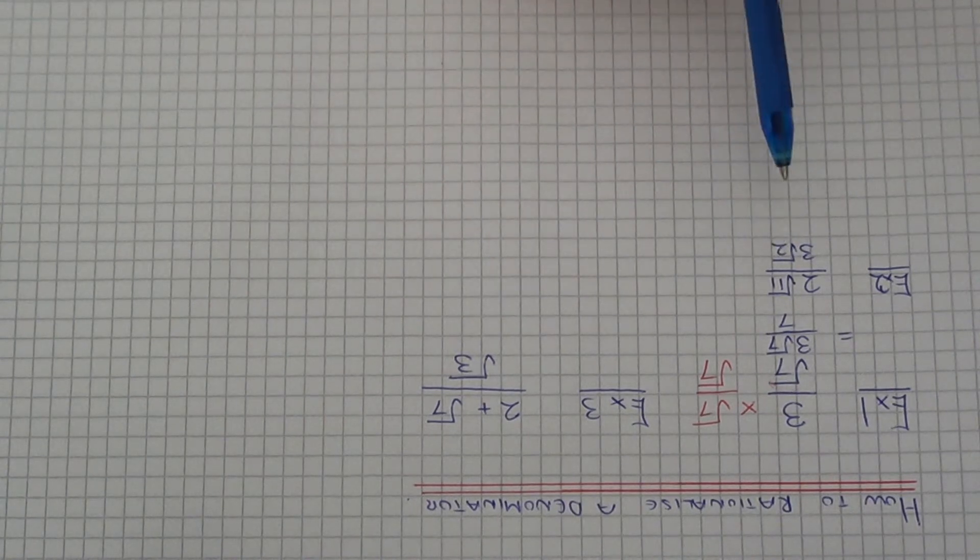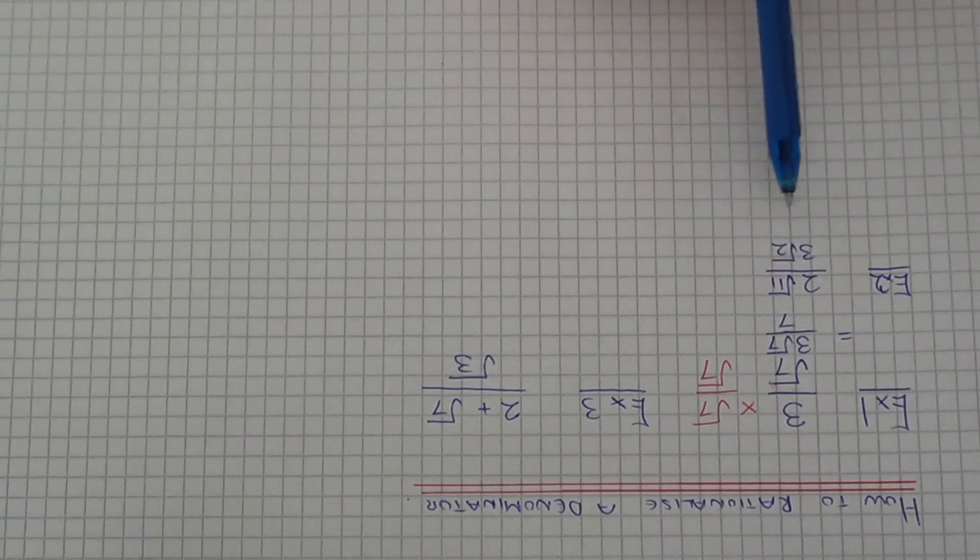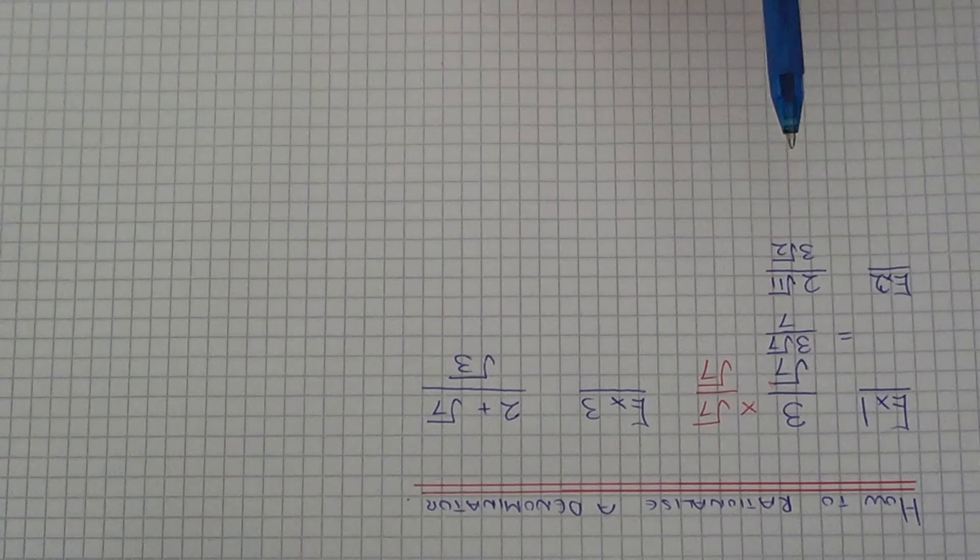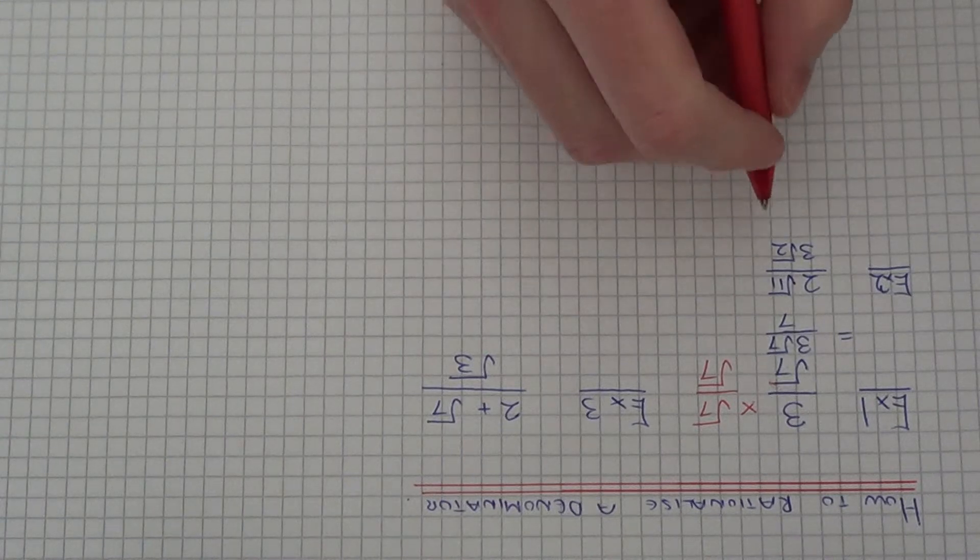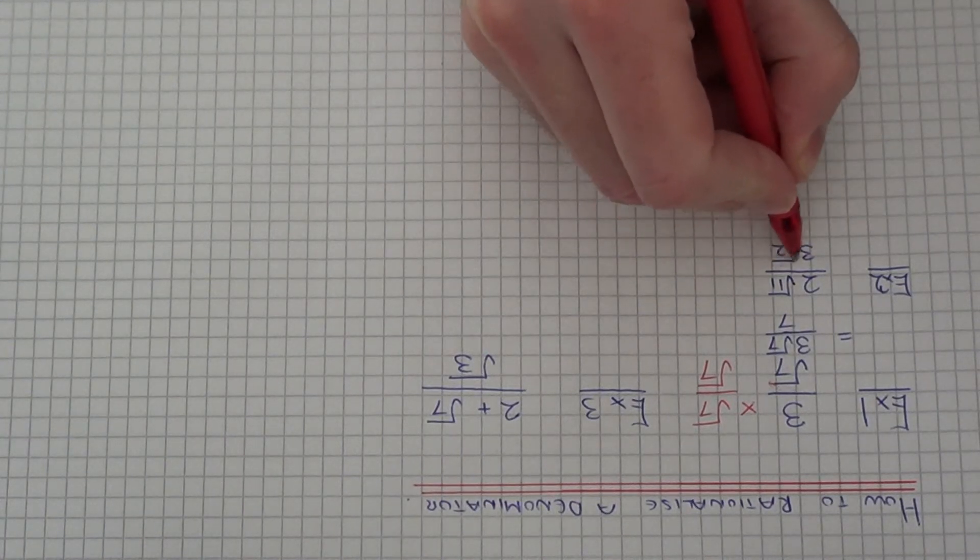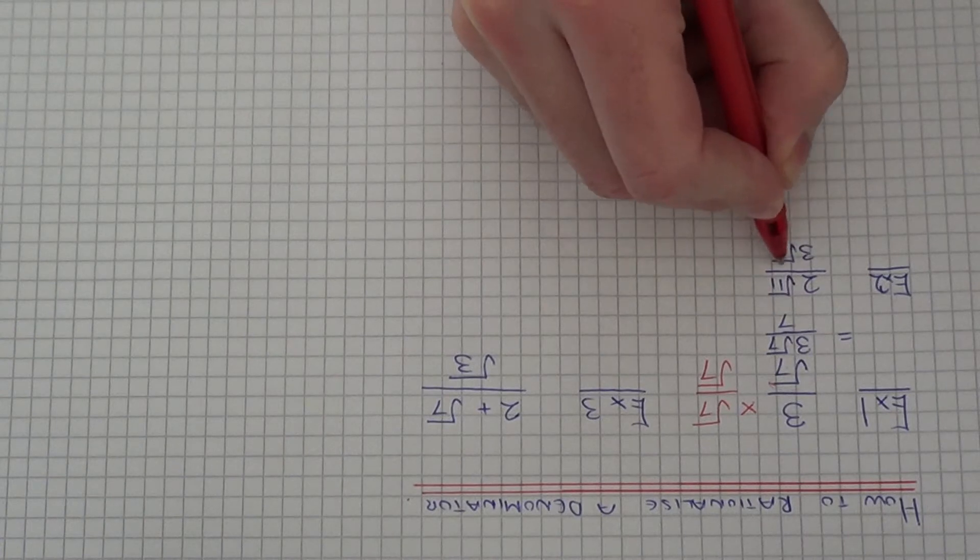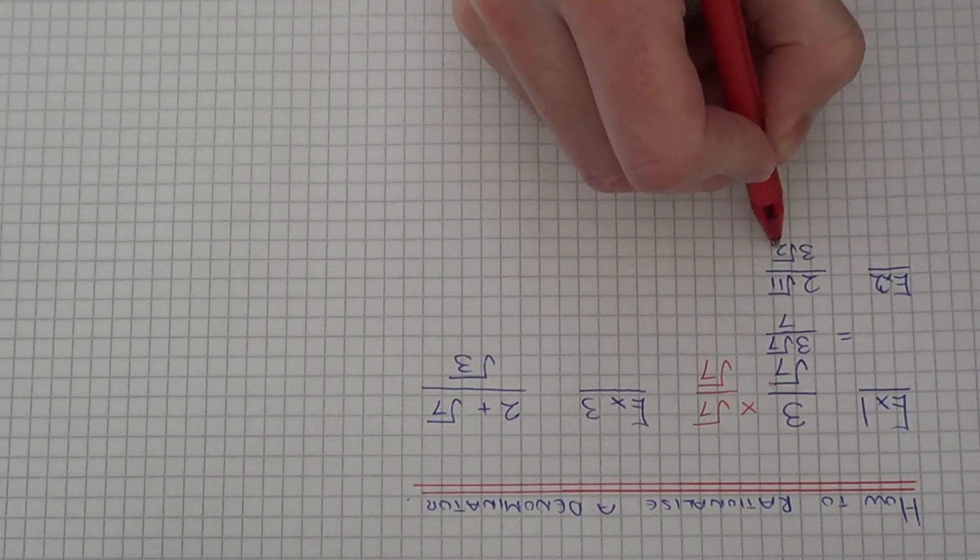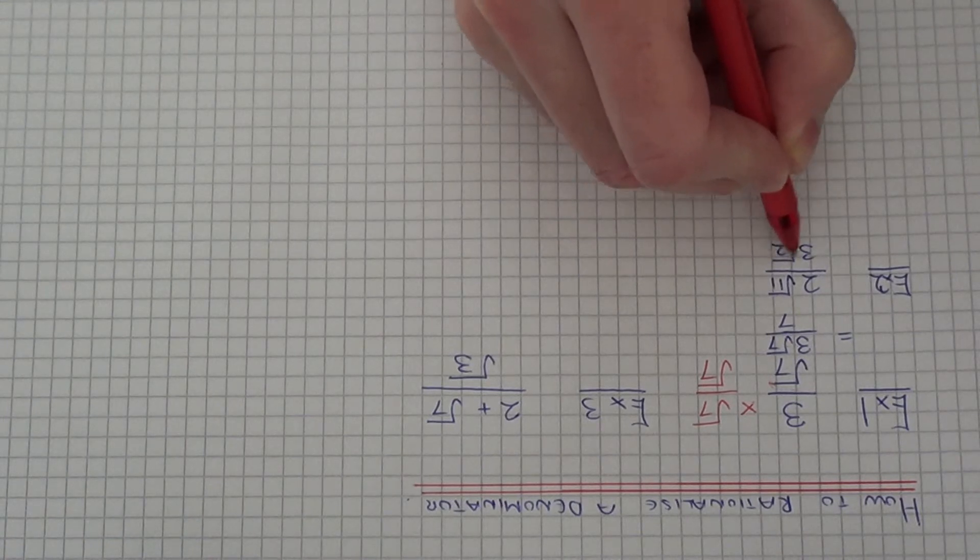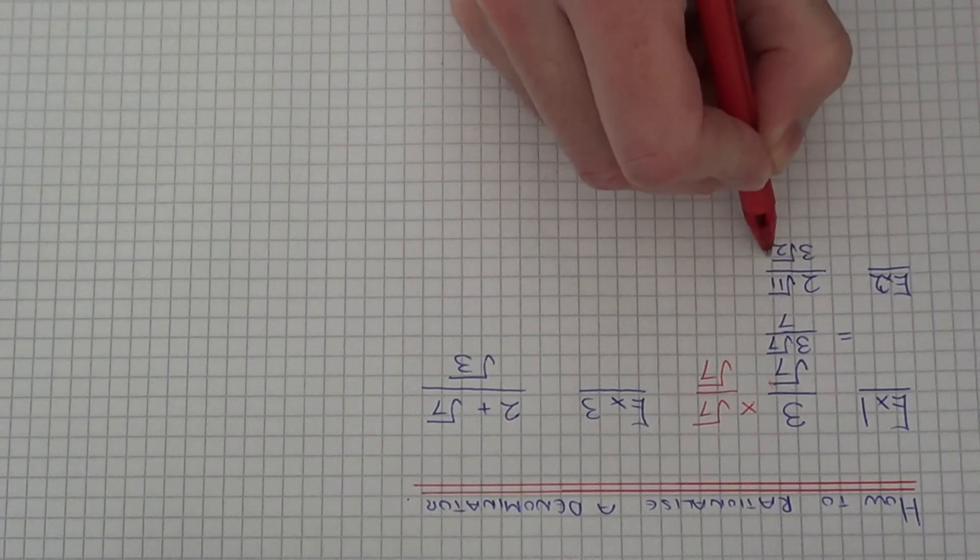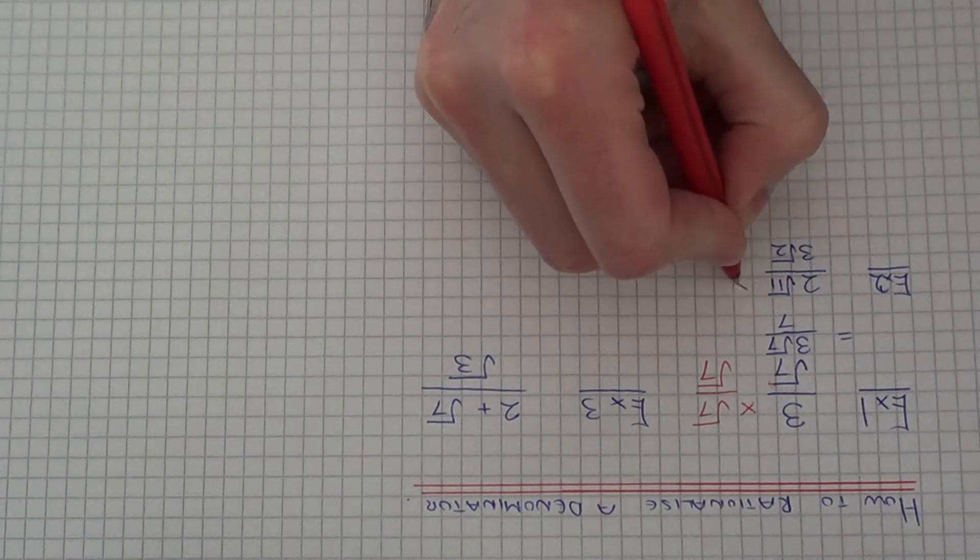So let's move on to example 2. So this time we have 2 root 11 over 3 root 2. So again, we need to rationalise the denominator. So we just need to multiply by the surd on the denominator. So we need to multiply the top and bottom by root 2. There's no need to multiply by 3 root 2. Just multiplying it by root 2 will be good enough.